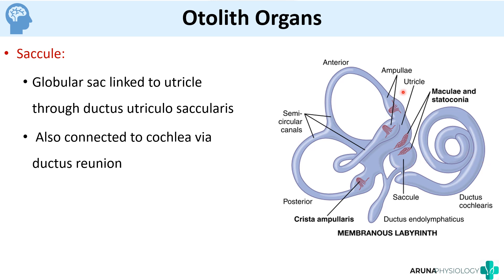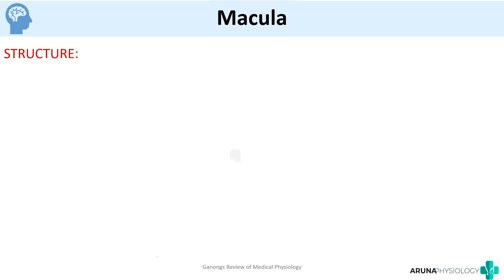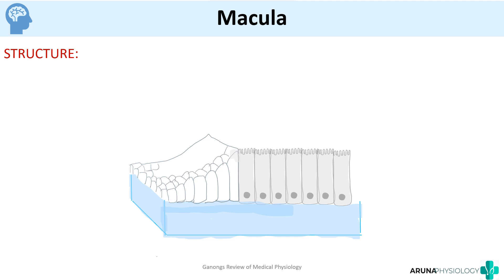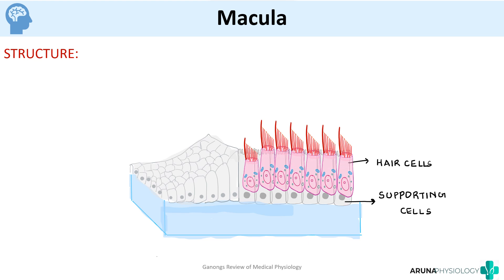Inside the utricle and saccule there is a structure called the macula. The sense organ present in the semicircular canals is the crista ampullaris, whereas the sense organ for utricle and saccule is the macula. The macula consists of hair cells as well as supporting cells. We can draw the hair cells, which are the receptors for utricle and saccule. On the hair cell we have the kinocilium, which is the major cilium, and then we have the stereocilia. On top of the hair cells there is a gelatinous layer, and the hair cells are embedded into this gelatinous layer.